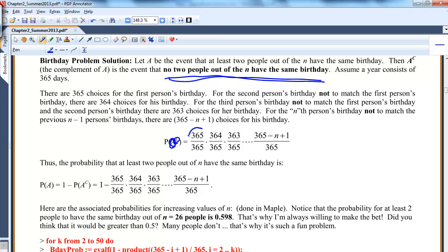So this is the first person. They have 365 choices. The second person, not to match the first person, has 364 choices. The third person, not to match the first two people, has 363 choices all the way down to 365 minus N plus 1 over 365 to the N.